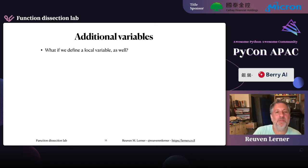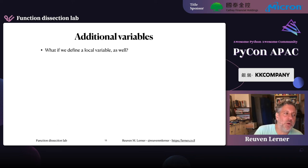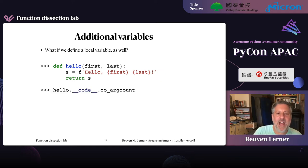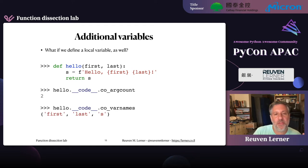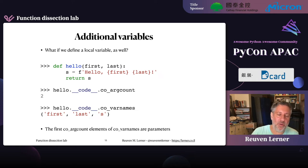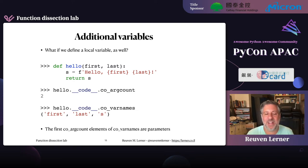What if we define a local variable inside the function? I'll say def hello(first, last): s = f'hello {first} {last}'; return s. co_argcount is still 2, but co_varnames now has three elements: first, last, and s. The first co_argcount elements of co_varnames are parameters; s is just a local variable. The difference between a parameter and a local variable is that a parameter gets its value from the caller, whereas a regular local variable gets its value inside the function.